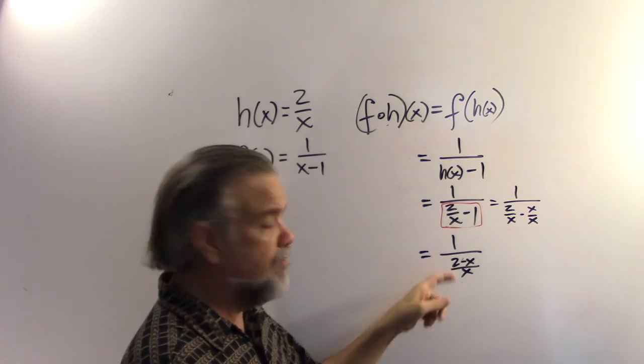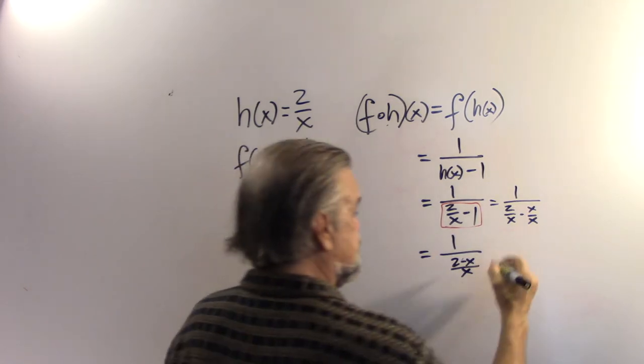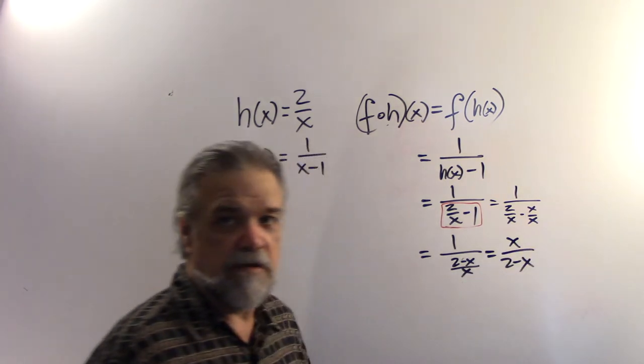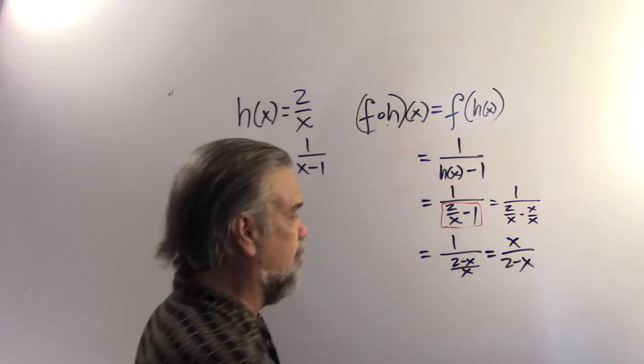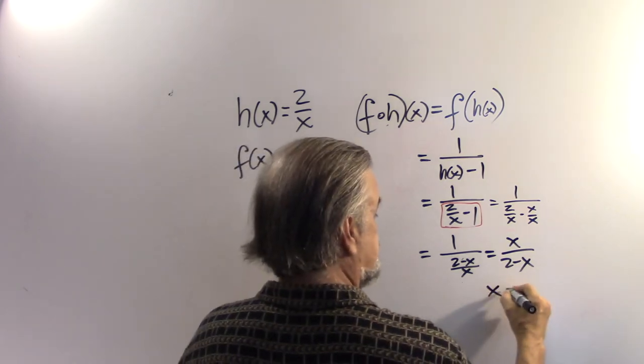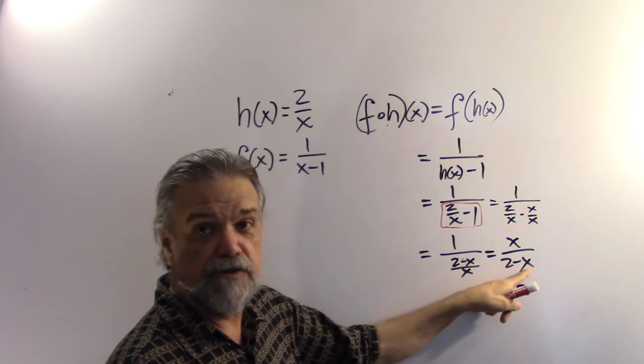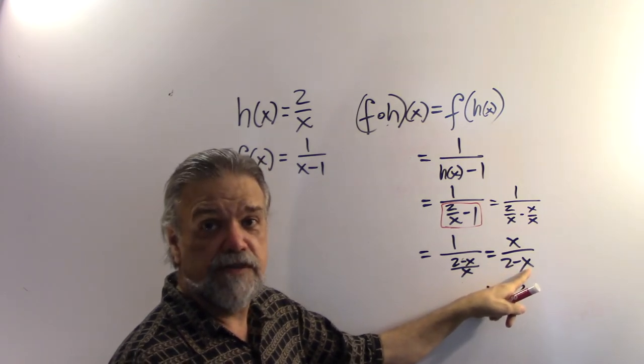And 1 over a fraction is just the reciprocal of that fraction. So this is going to be x over 2 minus x. And I'd say, okay, great. What's the domain of this function? Well, the domain is going to be x cannot equal 2. I can see that right there, because if x were 2, then we'd have 0 in the denominator.